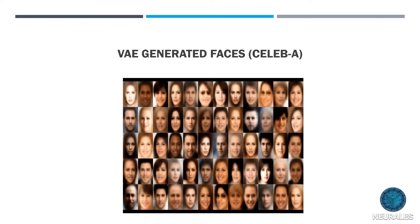This data set here is the CelebA data set - a dataset of celebrity faces. The VAE is trained on these celebrity faces and learns to generate realistic-looking celebrity faces. None of the faces you see in this image are actually real; they're simply data generated from the VAE after it was trained on the dataset.